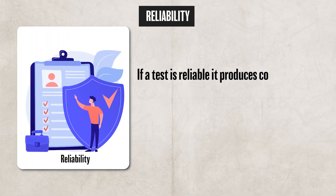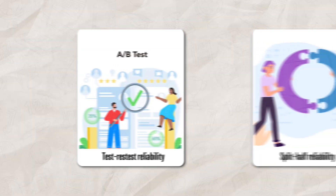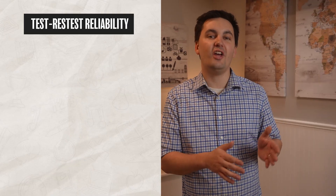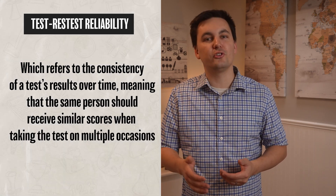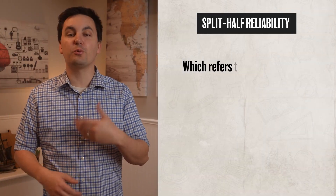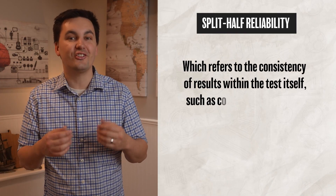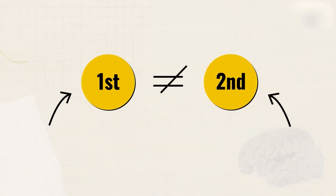The third and last standard a test must have is reliability. If a test is reliable, it produces consistent results each time it is given — meaning if you take the test multiple times, the score should be similar. For AP Psychology, there are two types of reliability to know. The first is test-retest reliability, which refers to the consistency of test results over time, meaning the same person should receive similar scores on multiple occasions. The second is split-half reliability, which refers to consistency within the test itself, such as comparing results from two halves of the same test. Ideally, there should be a high correlation between the two halves.